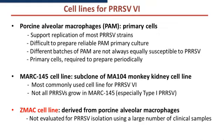How do we do virus isolation? Traditionally, two tools are used. One is PAM cells — porcine alveolar macrophages — which are primary cells that can support most PRRS strains, but they are difficult to propagate, there can be variation between batches, and you need to periodically prepare them. The second tool is the MARC-145 cell line, most commonly used in labs. But the success rate can sometimes be quite low. Now we have the ZMAC cell line, which is derived from PAM cells.